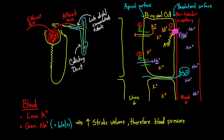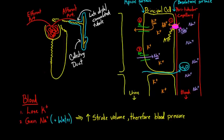In our last video, we left off talking about aldosterone and how it works on the principal cell. The two big ideas were losing potassium and gaining salt and water. That was how it worked on the principal cell.